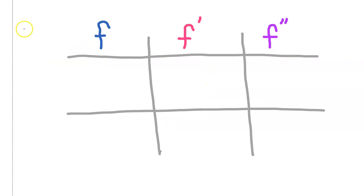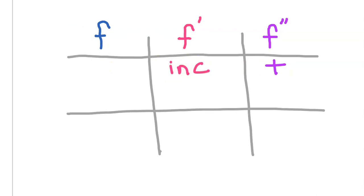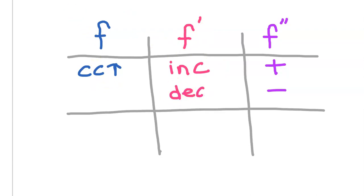Before we go any further, I need to teach you this little side lesson. This is the most important thing you need to know about the relationship between the original function, the first derivative, and the second derivative. It's a pattern that goes like this: if the second derivative is positive, then the first derivative is increasing, and the original function is concave up. Now the opposite: if the second derivative is negative, the first derivative will be decreasing, and the original function will be concave down.